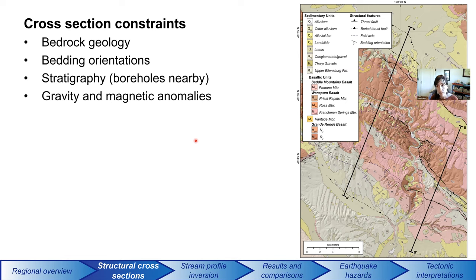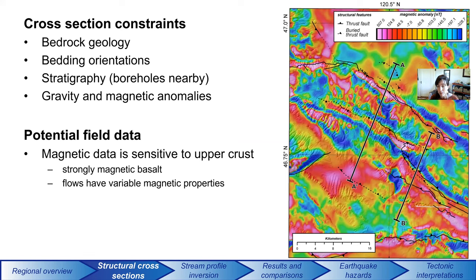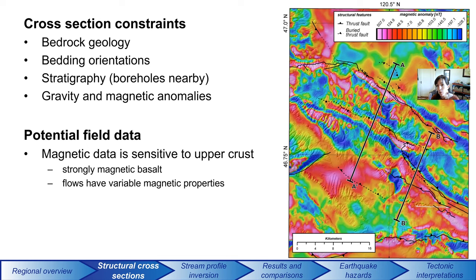One of the really incredible data sets we have in this region are gravity and magnetic anomalies. Here is a map showing fairly high-resolution aeromagnetic anomalies. What's useful is that we have a lot of strongly magnetic basalt here, and the Columbia River flood basalt flows have different magnetic properties depending on when they cooled — over the 17 to 10 million years ago that they were being erupted. When a fault deforms the strata and juxtaposes different basalt units with variable magnetic properties next to each other, that really shows up in the aeromagnetics. You can see some really strong gradients near where these faults and folds are.